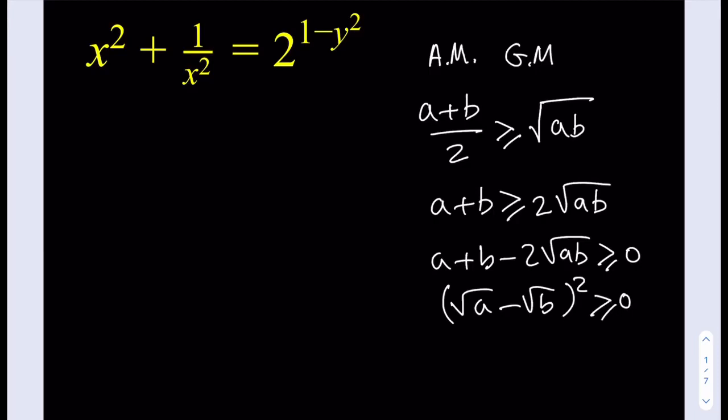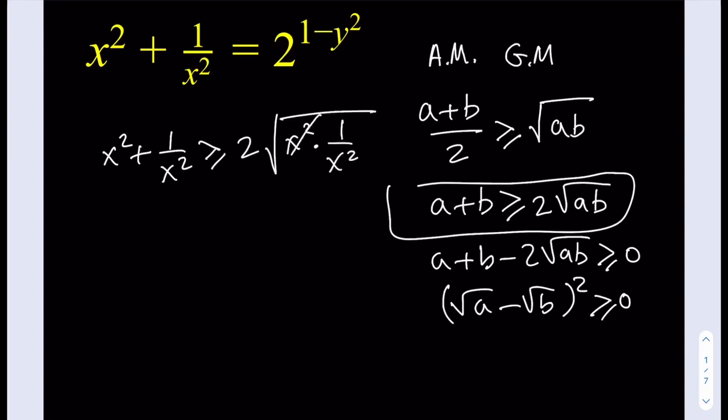Okay, so how do we use that in our problem? Well, we're going to take a and b as these two numbers here, x squared and 1 over x squared. So we're going to have their arithmetic mean first, which is their sum, x squared plus 1 over x squared. So I'm going to be using this version here. That's going to be greater than or equal to 2 times the square root of x squared times 1 over x squared. And obviously, they're going to cancel out. And we're going to get x squared plus 1 over x squared being greater than or equal to 2.